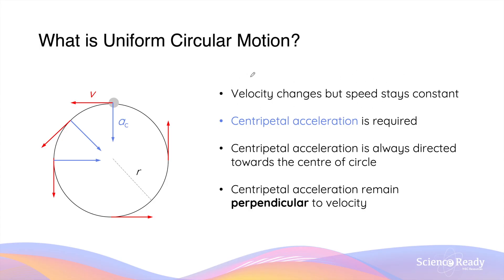Although the speed — that is, the magnitude of the velocity — stays constant, the direction of the velocity changes as it goes around the circle. I've used red arrows as vectors to illustrate the changes in direction for the velocity vector. In order for an object with mass to undergo such a motion, we need to have some sort of acceleration to cause the velocity vector to change in the direction shown.